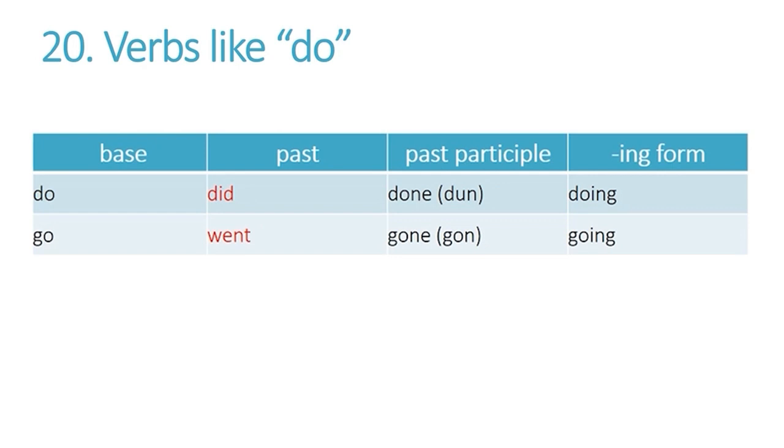Now in the past participle the spelling of the ending is the same but the pronunciation is different. O-N-E with DO is pronounced DONE. O-N-E with GO is pronounced GONE. And then the ING forms are the same in the spelling but different in the pronunciation DOING and GOING.